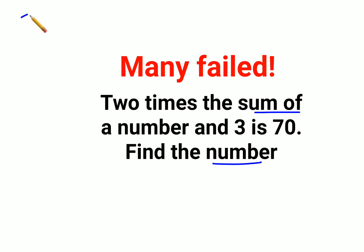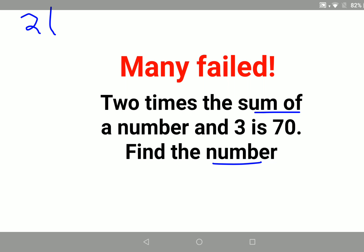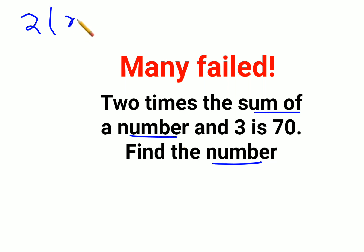So 2 times — we will keep it as 2 into. Let the number be x, plus 3. We had sum, that's why I added 3. And 'is' means equal to 70.